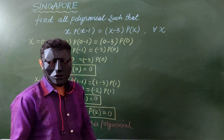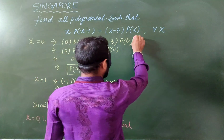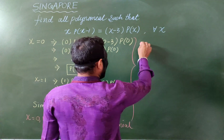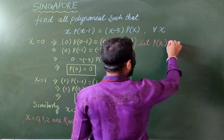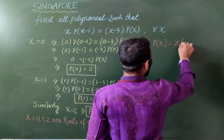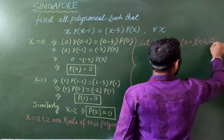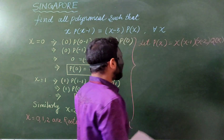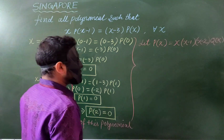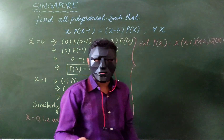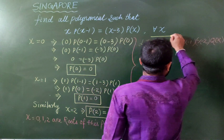When you know the roots of the polynomial you can construct the equation. So therefore we write: let p(x) equals x times (x minus 1) times (x minus 2) times q(x), some polynomial. Because we are not sure if any other zeros exist, we have to include another polynomial factor q(x). This is an elementary result.